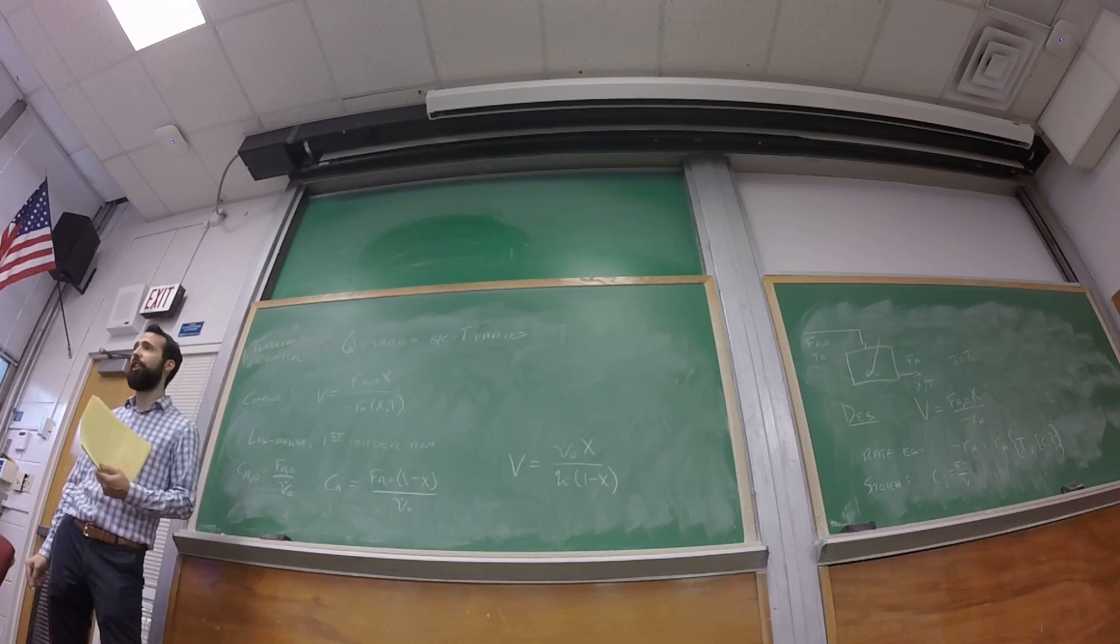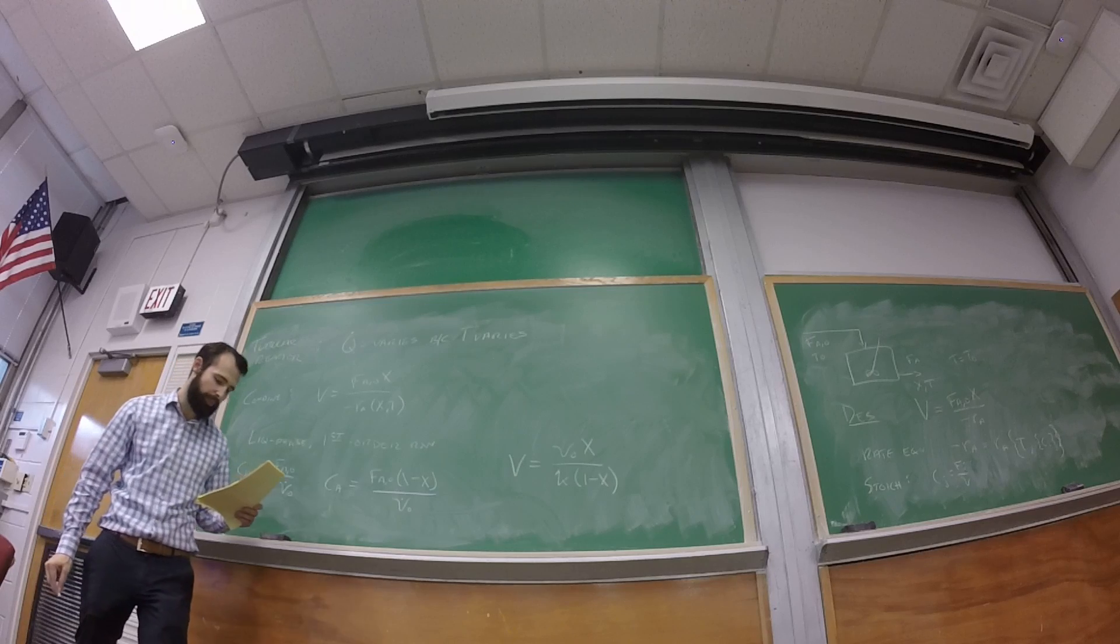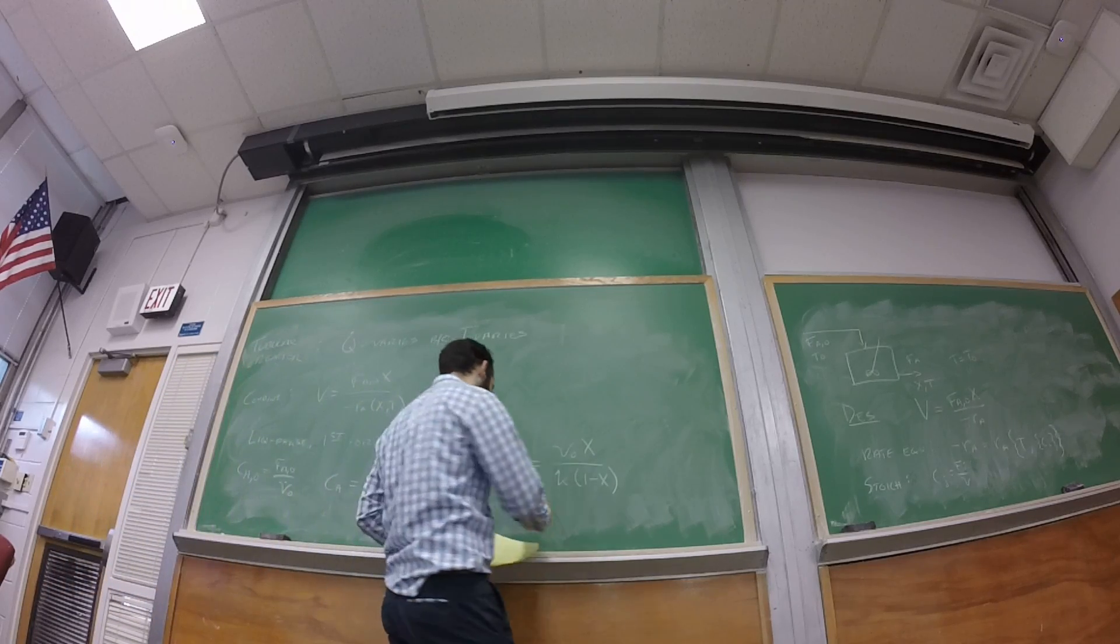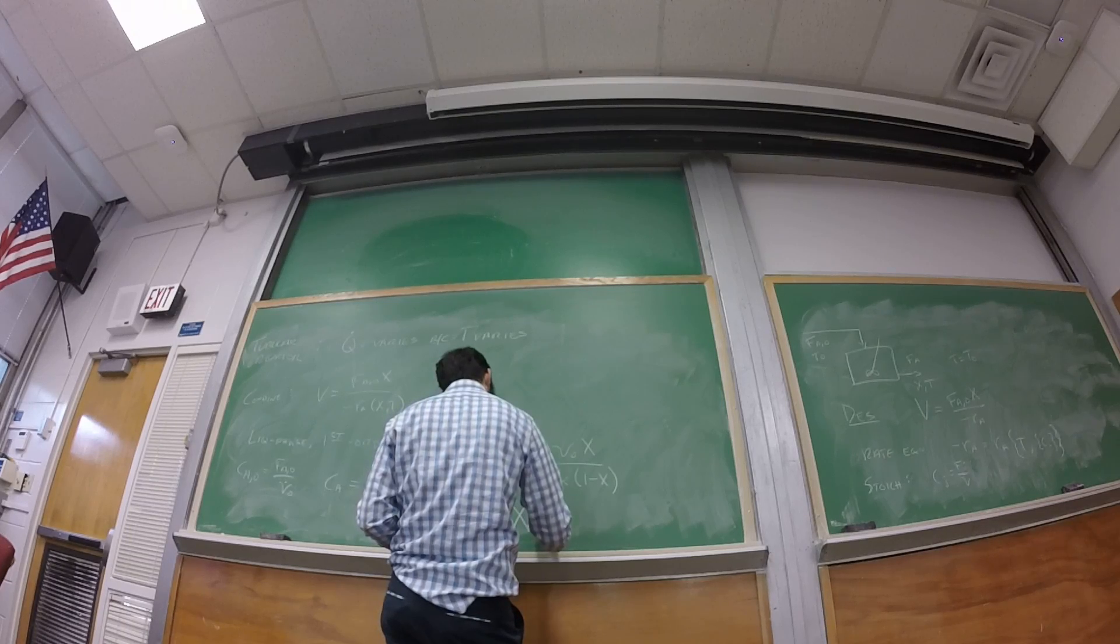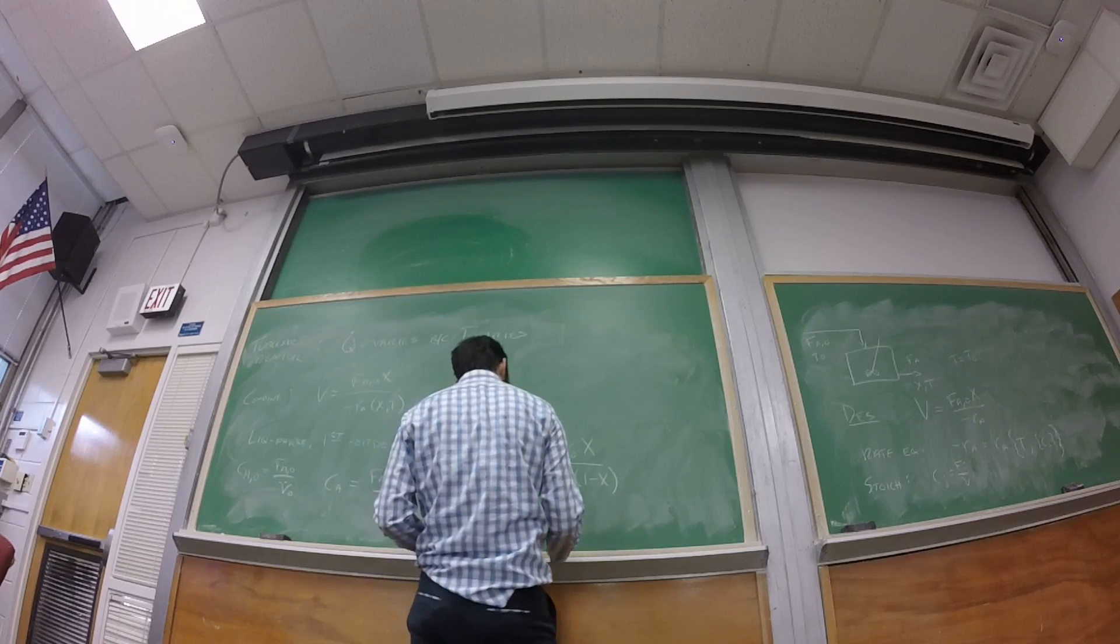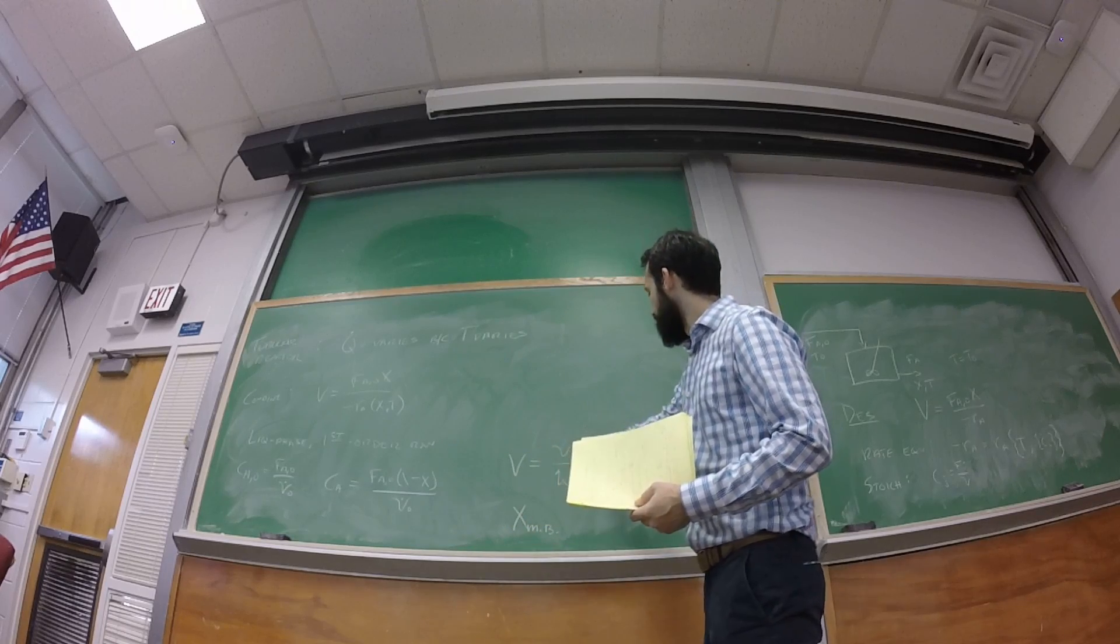Substituting in the rate equation, that's where the rate constant shows up. And now the conversion that I get from my material balance, I can solve for K.